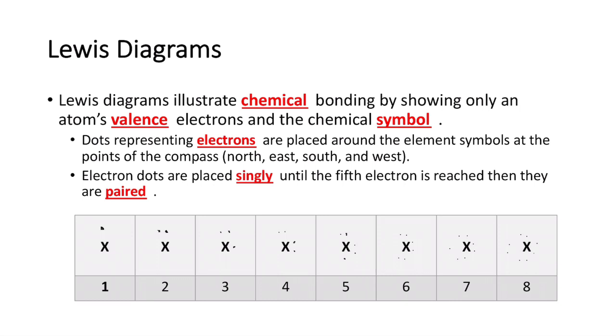Lewis diagrams illustrate chemical bonding by showing an atom's valence electrons and chemical symbol. Instead of showing all the rings, we just focus on the valence electrons. Dots representing electrons are placed around the element symbol at the points of the compass - north, east, south, then west, going clockwise. Electron dots are placed singly first until the fifth electron is reached, then they are paired.